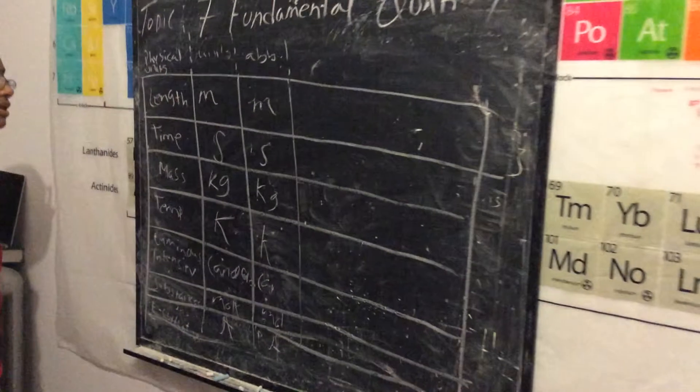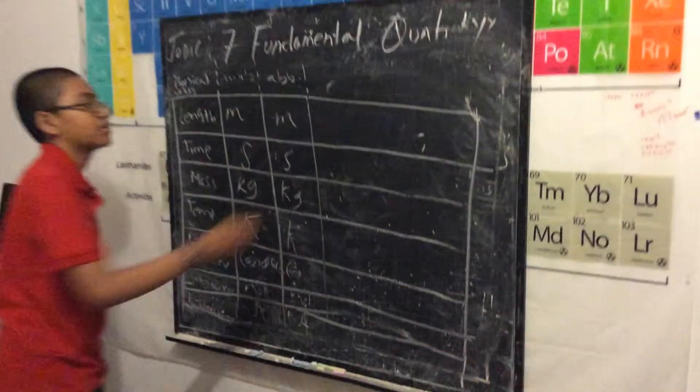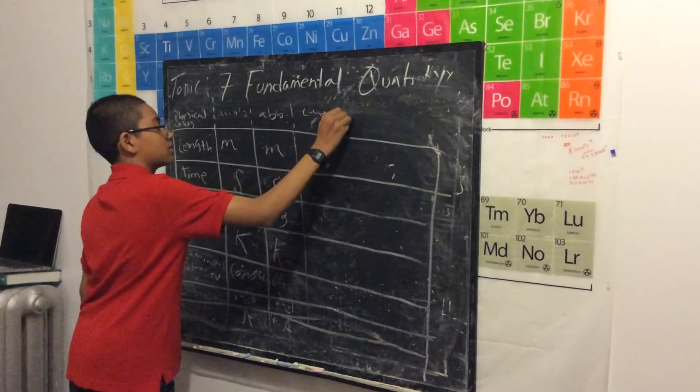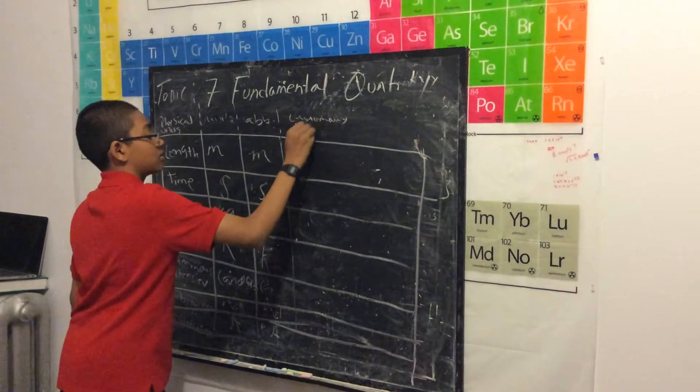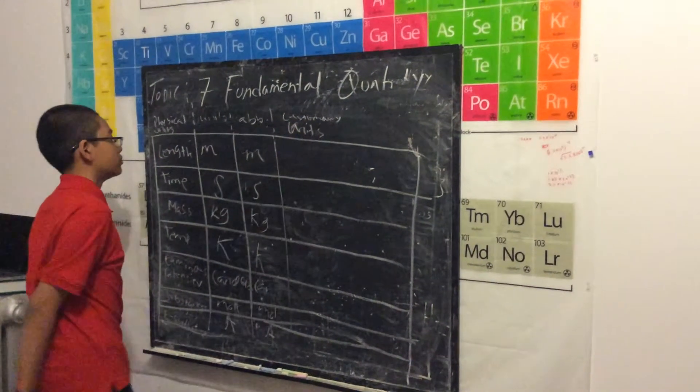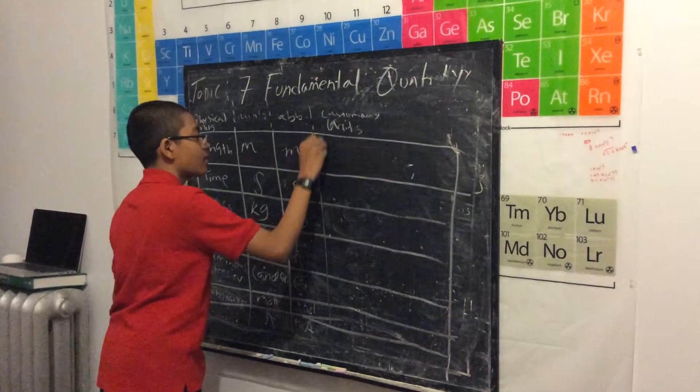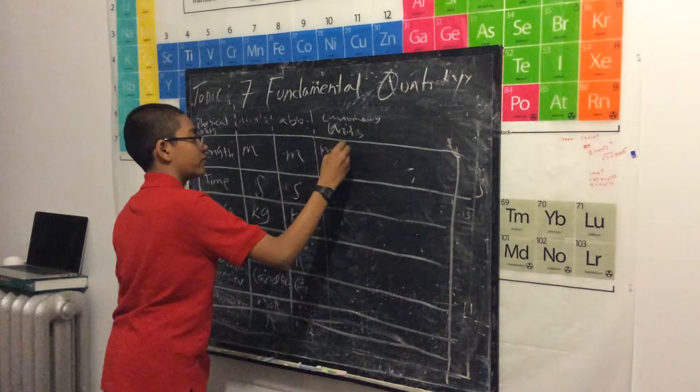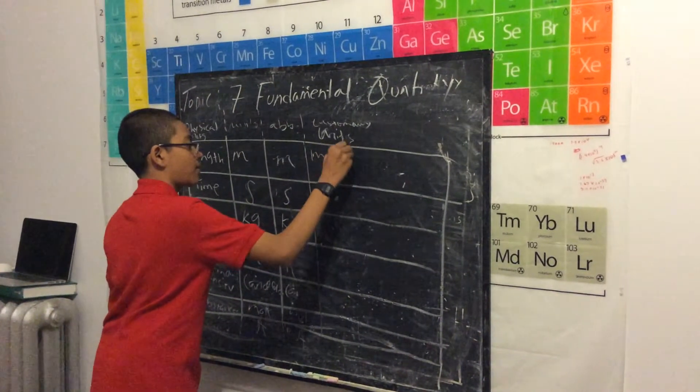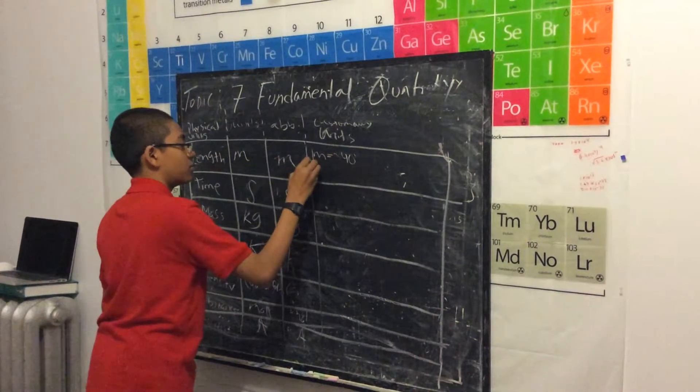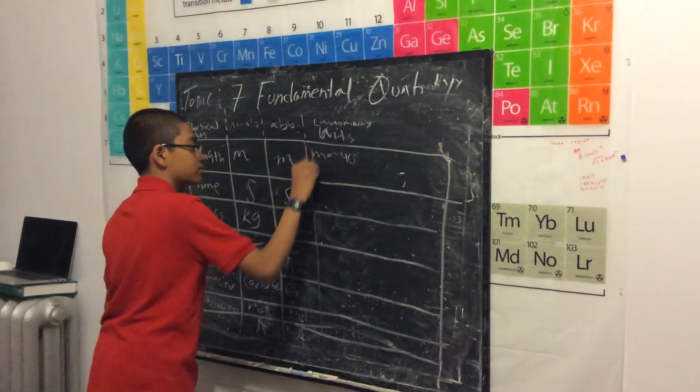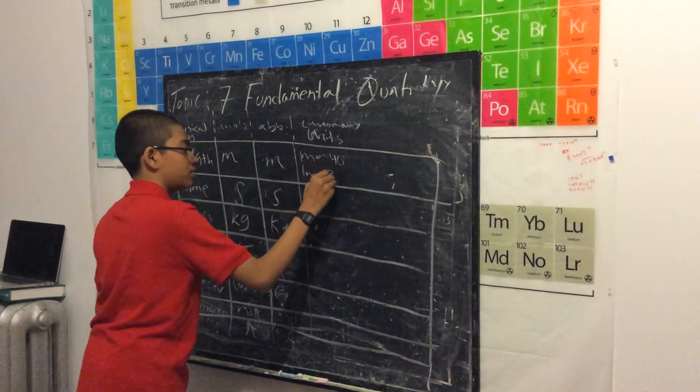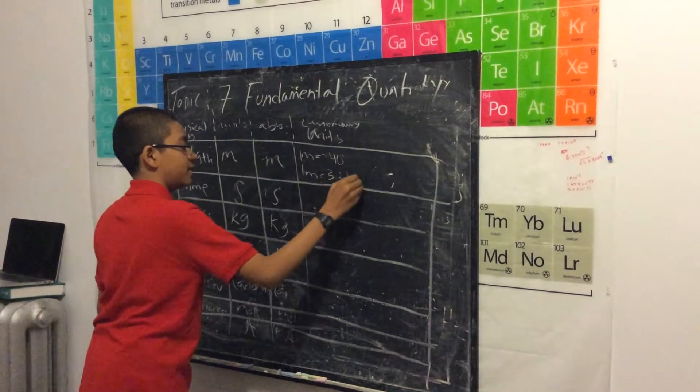So now let's compare it with the customary units. So one meter is about 40 inches, one meter is also 3.28 feet.